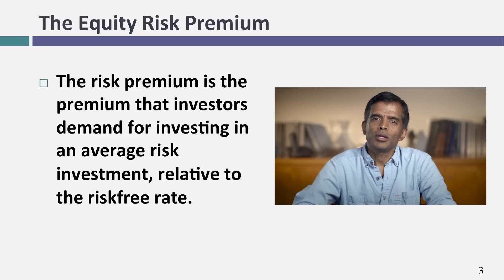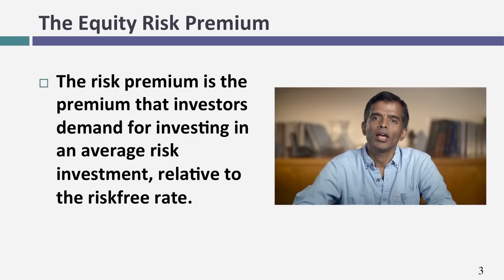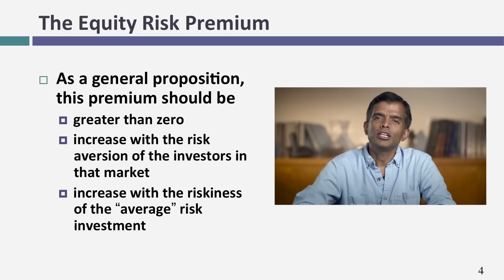The equity risk premium is the premium you, as an investor, would demand for investing in the average risk investment relative to the risk-free rate. Let's assume you can make 3% on something risk-free. The equity risk premium is what you demand over and above that 3% to invest in the average risk investment. It should be greater than zero — if you're accepting 3% risk-free, you would not settle for less than 3% if you're investing in something risky.